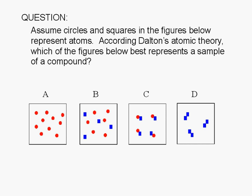Assume circles and squares in the figures below represent atoms. According to Dalton's Atomic Theory, which of the figures below best represents a compound?